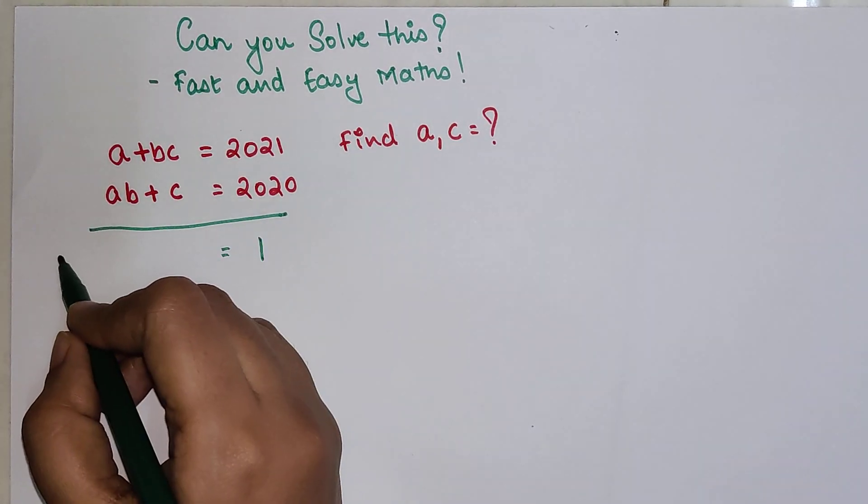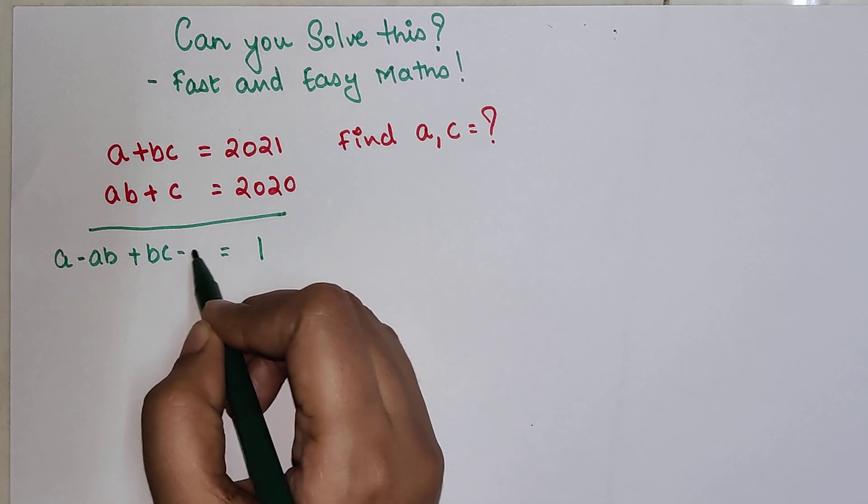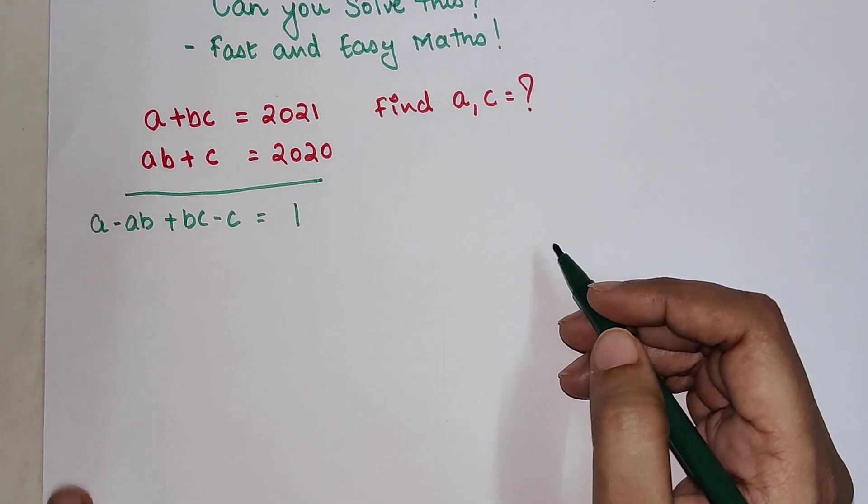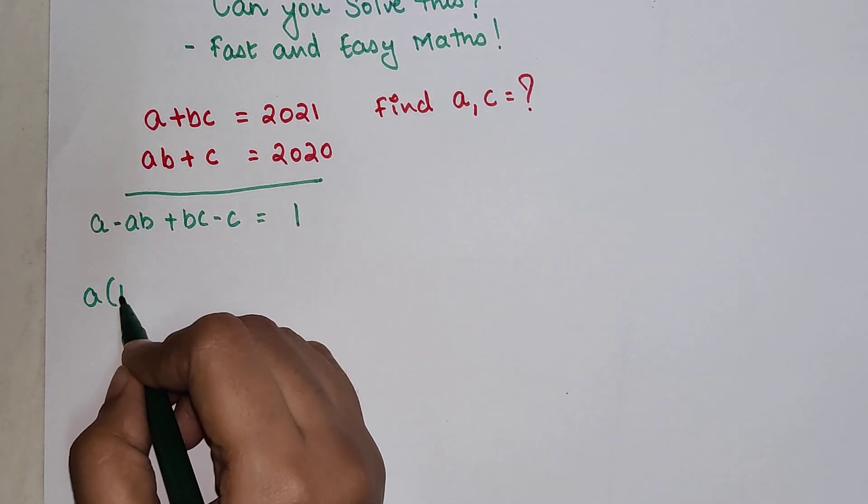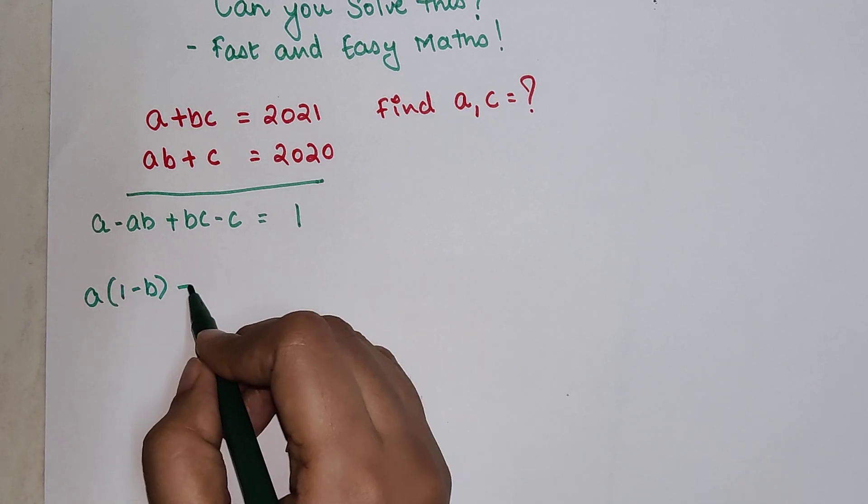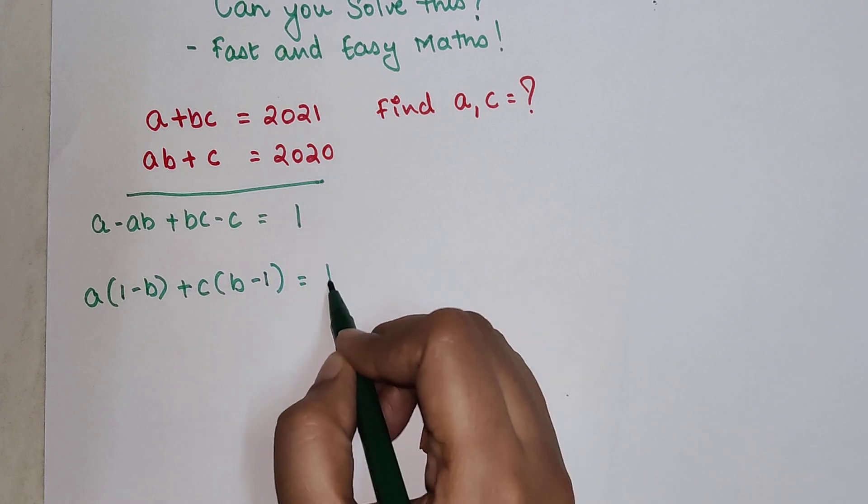And here we will get A minus AB plus BC minus C. So now here I can take A common so I have 1 minus B plus let's say if I take C common so I have B minus 1 equals 1.